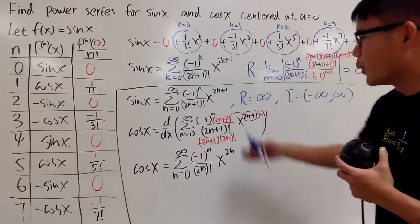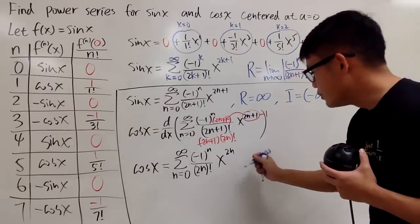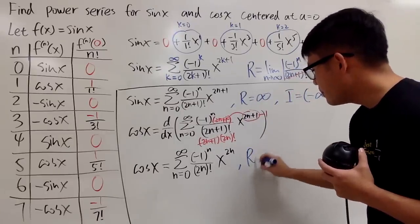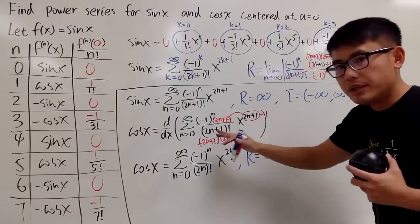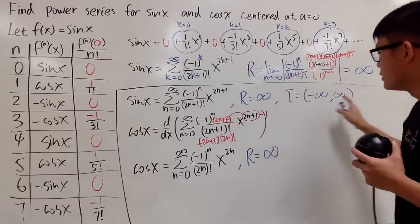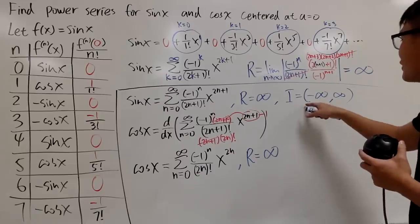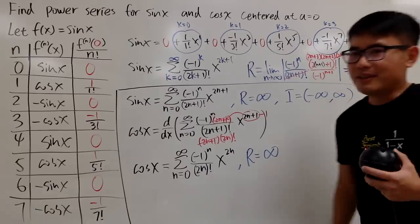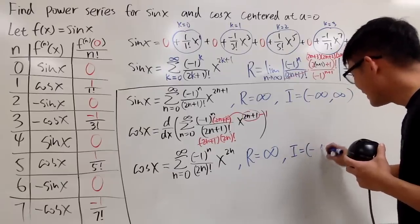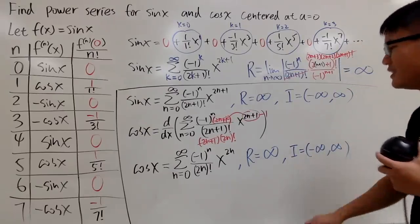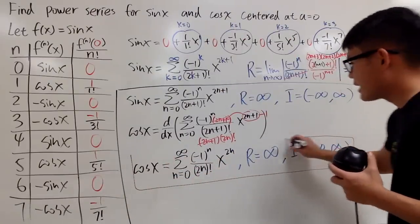And the good news is that when you differentiate the power series, the radius of convergence stays the same. So we still have r being infinity. But when you differentiate the power series, you really have to check the convergence at the endpoint of the interval of convergence. But since this is just going from negative infinity to positive infinity, technically, there's no such thing as endpoint. Good news! We are done. So this is for cos x.